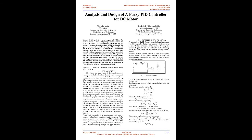Abstract: In this project we have designed a DC motor for which speed can be controlled by using various controllers like P, PI, PID, and fuzzy. By using different controllers, we can compare various performances of the DC motor.